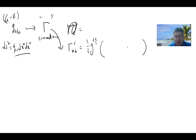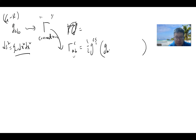The Christoffel symbol Γ^σ_{AB} has symmetry under A and B. Explicitly it is: Γ^σ_{AB} = ½( ∂_A g_{Sβ} + ∂_B g_{SA} − ∂_A g_{BS} ).